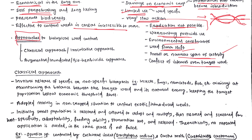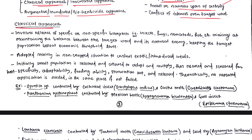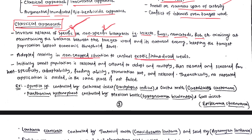There are two approaches of biological control: the classical or inoculative approach, and the augmentative or inundative or bio-herbicide approach. The classical approach involves specific or non-specific bio-agents like insects, fungi, nematodes, and fish to manage weed population below the threshold level. Some bio-agents are specific to certain weeds, while others like fish are non-specific.